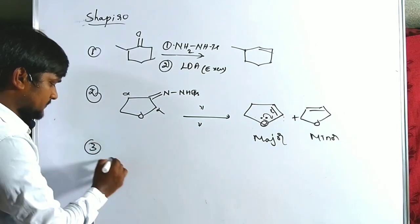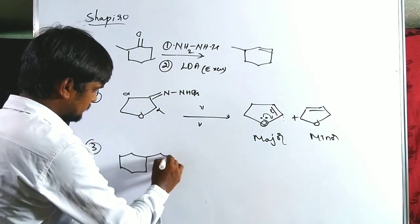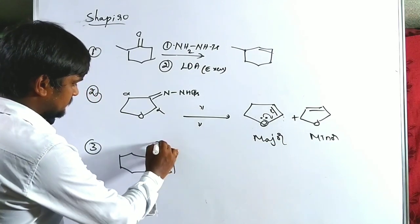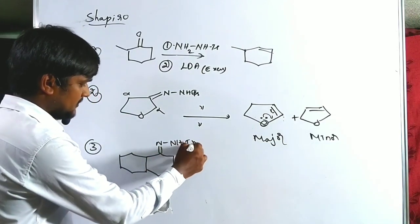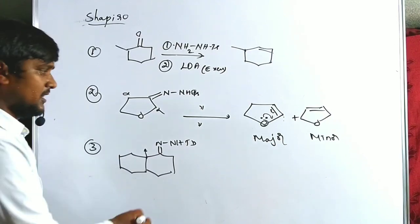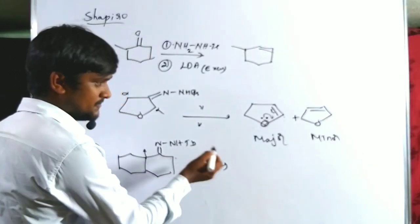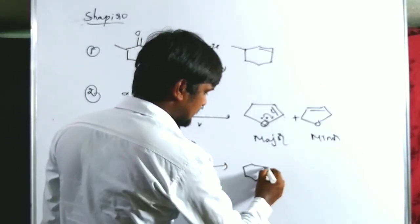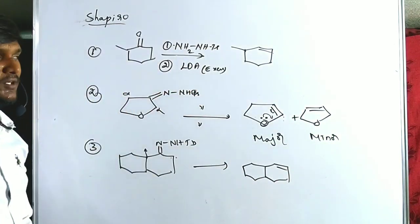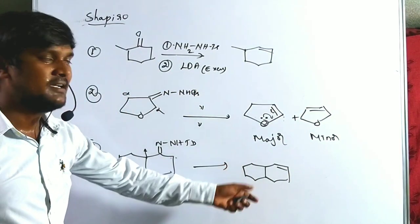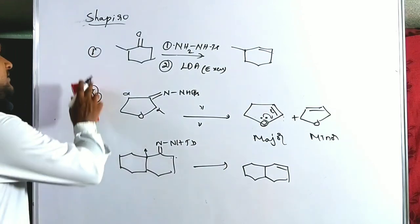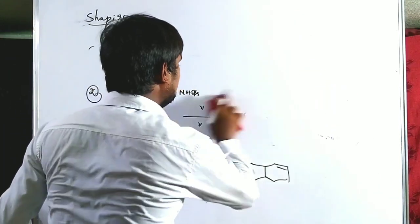In the third example, the tosyl hydrazone has one alpha hydrogen on one side but it is sterically more crowded there, so proton abstraction takes place only at the right side (less crowded), giving only one single product. This is an example of Shapiro reaction giving a single regiochemical outcome.